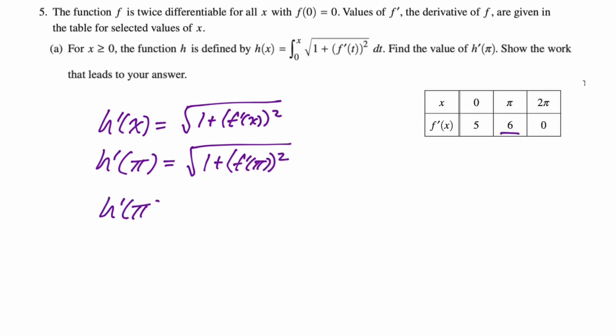We look at the table and we can see that f prime of π is 6, so this will be the square root of 1 plus 6 squared, so the square root of 37. I think that's right, seems deceptively easy.